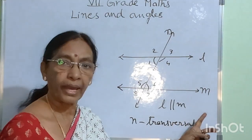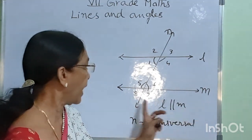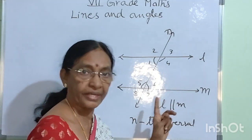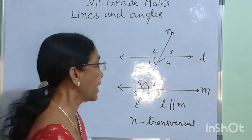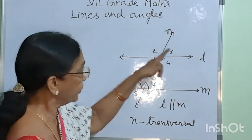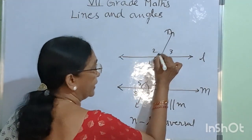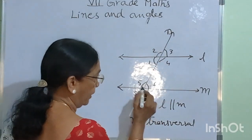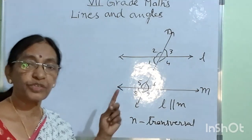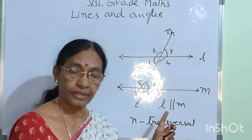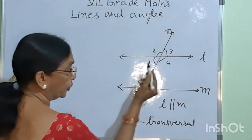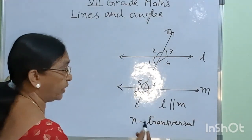L and M are parallel to each other, L is parallel to M, and N is a transversal intersecting the two parallel lines at two different points. The angles made by the transversal are 1, 2, 3, 4 here, and 5, 6, 7, 8, another 4 angles here. Each pair of corresponding angles are equal. Corresponding angles means angle 2 and angle 5 are corresponding angles.